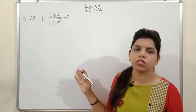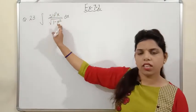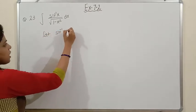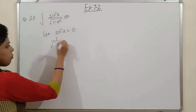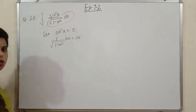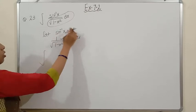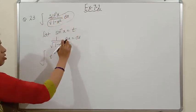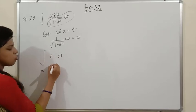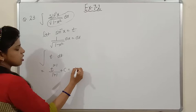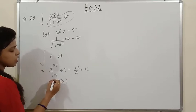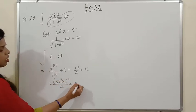Question 23: integration of sin⁻¹x/√(1−x²) dx. The function and its derivative are both given directly. Let sin⁻¹x = t. The derivative of sin⁻¹x is 1/√(1−x²), so (1/√(1−x²)) dx = dt. The integral becomes ∫t dt = t²/2 + c = (sin⁻¹x)²/2 + c. Please note this down.